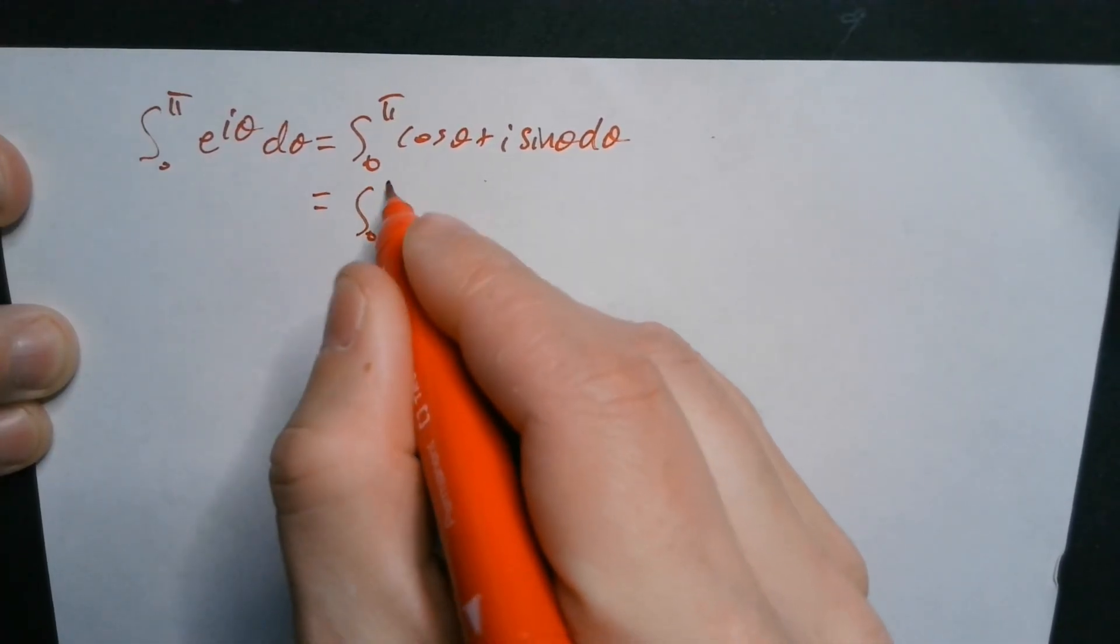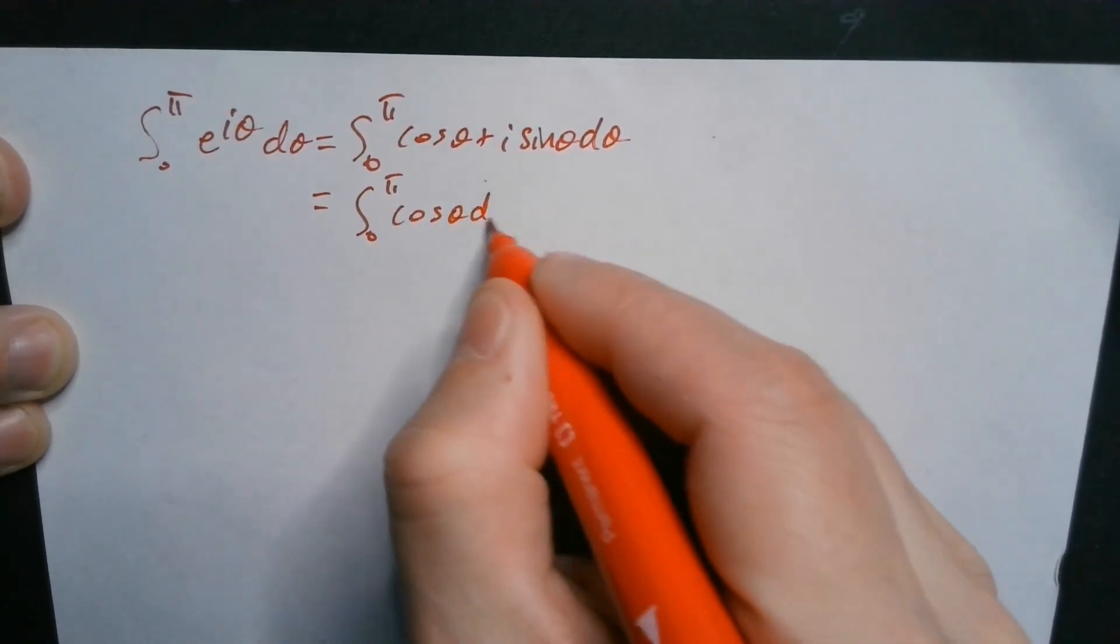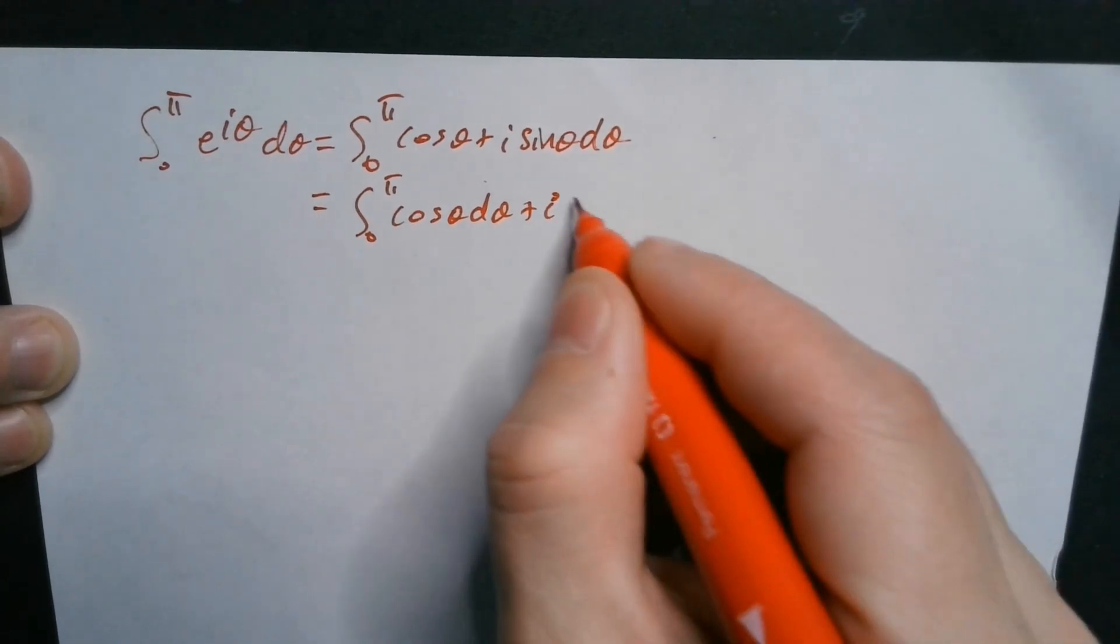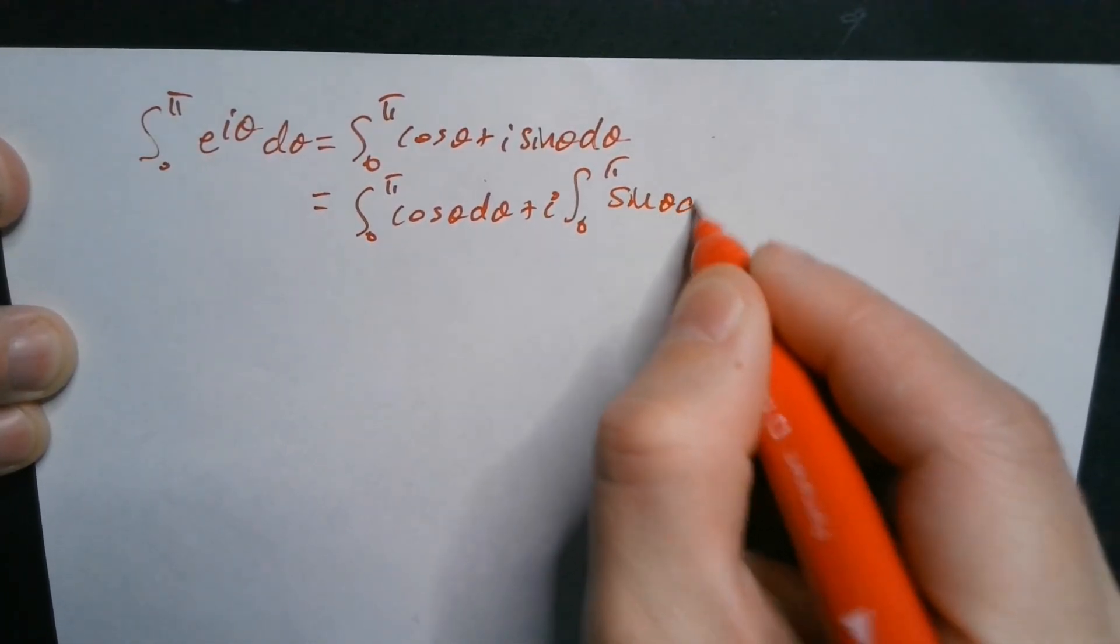Then you continue, so the integral from 0 to pi, and you can distribute the d theta in this. You're going to have cosine theta d theta plus i on the outside and the integral from 0 to pi of this sine of theta d theta.